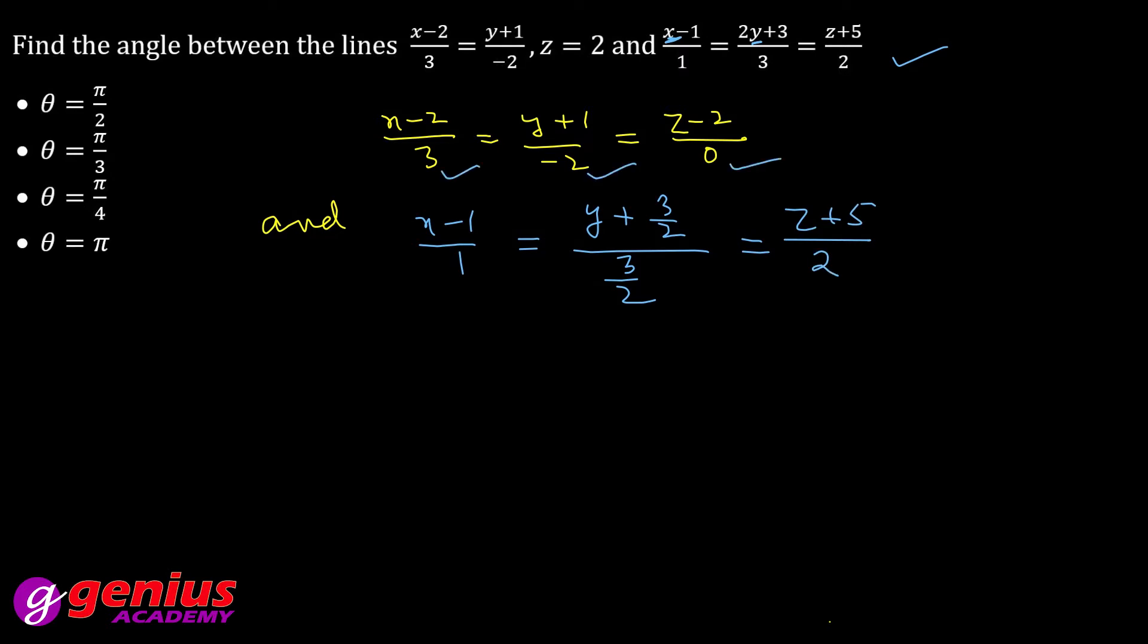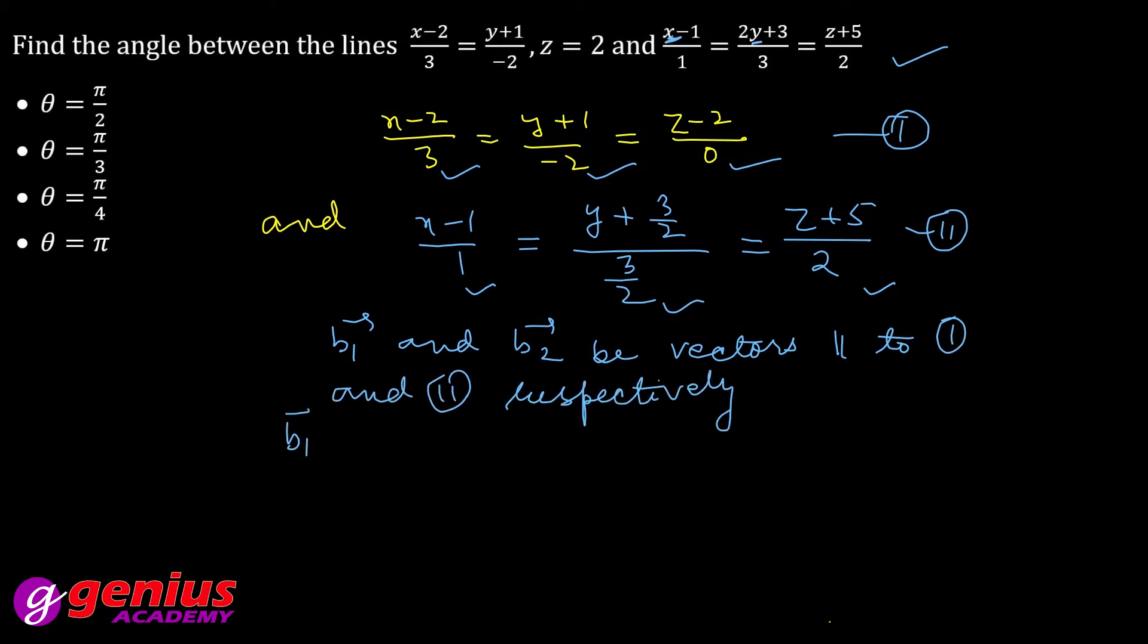Next question: parallel to your first equation and second equation, parallel to 1 and second respectively. So what is B1? B1 vector 3i minus 2j plus 0k and B2 vector i plus 3/2 j plus 2k.